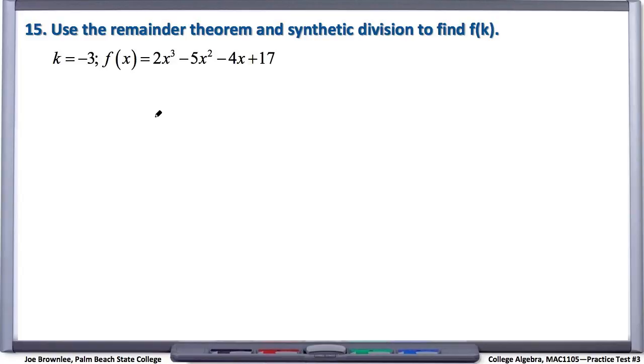So all we're gonna do here with number 15 is we're gonna perform synthetic division using this k value and this function, find what our remainder is, and once we have our remainder, we're gonna check ourselves to see if the remainder is the same value as we obtain by plugging in this k value into the function and evaluating.